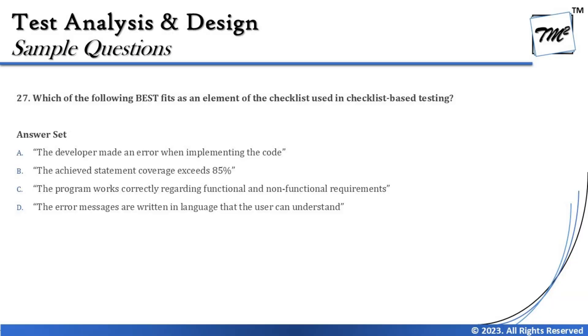Option A says: the developer made an error when implementing the code. This is an error conducted by the developer, but not a test condition to measure. You write test cases to identify these types of errors, but the test case would be to check the functionality where you think the developer would go wrong — not to state that the developer made an error. So this is not an item to be included in the checklist.